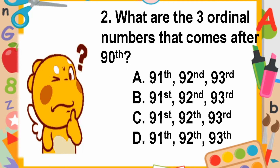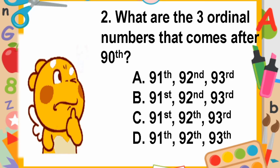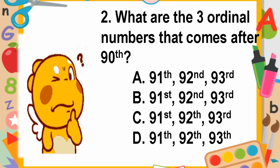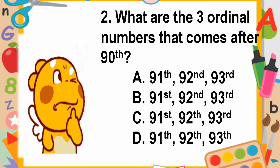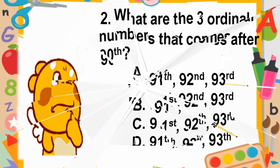Question number two: what are the three ordinal numbers that come after 90th? Is it letter A, B, C, or D?